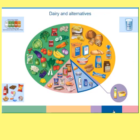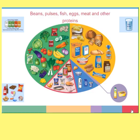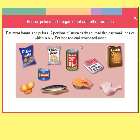The last section is proteins. It suggests that we should eat more beans and pulses, two portions of sustainably sourced fish per week — one of which is oily — and eat less red and processed meat. There are different suggestions of what contains protein: things like lentils, eggs, fish, and oily fish like tuna or mackerel for example.